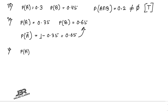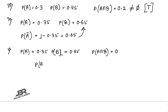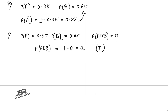Statement five: P(A) = 0.35, P(B) = 0.65, P(A∩B) = 0, then A and B are complementary events. P(A∪B) = 0.35 + 0.65 − 0 = 1. Since the union equals one and intersection equals zero, A and B are complementary. Answer: True.